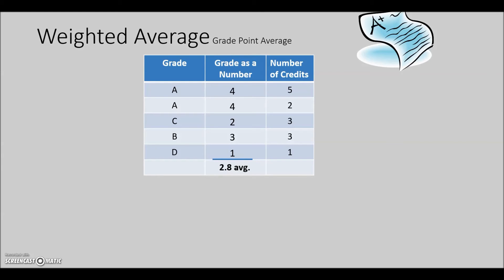We'll then multiply each scale value grade by the number of credit hours to get the grade points. For this first class, receiving an A, A having a value of four, we'll multiply that by five since it's a five credit course. Continuing on down, taking each grade as a number, multiplying it by the number of credits that course was gives us the grade points for each one.